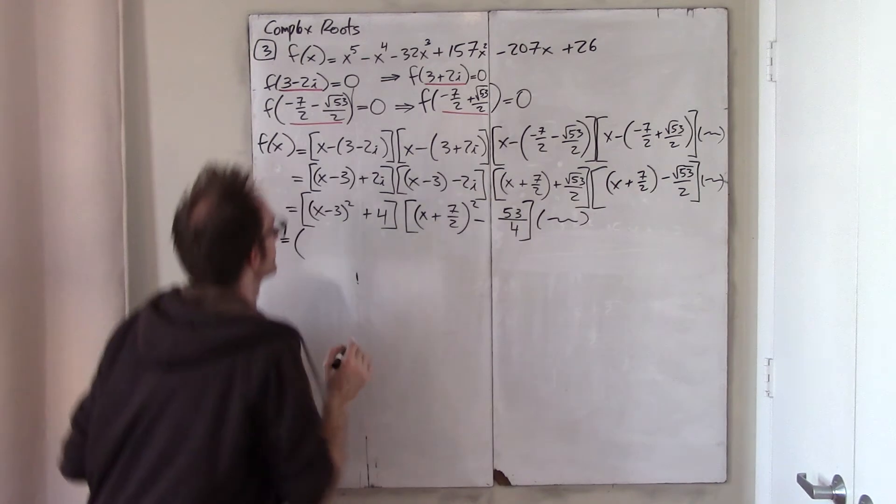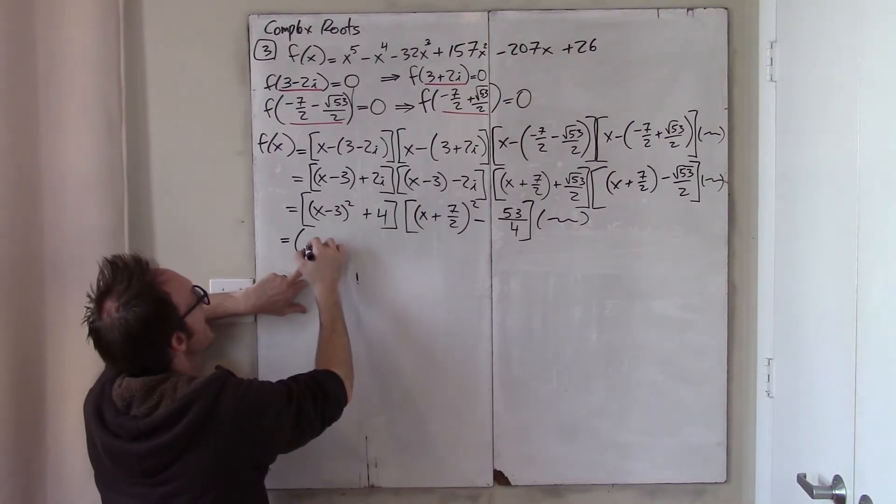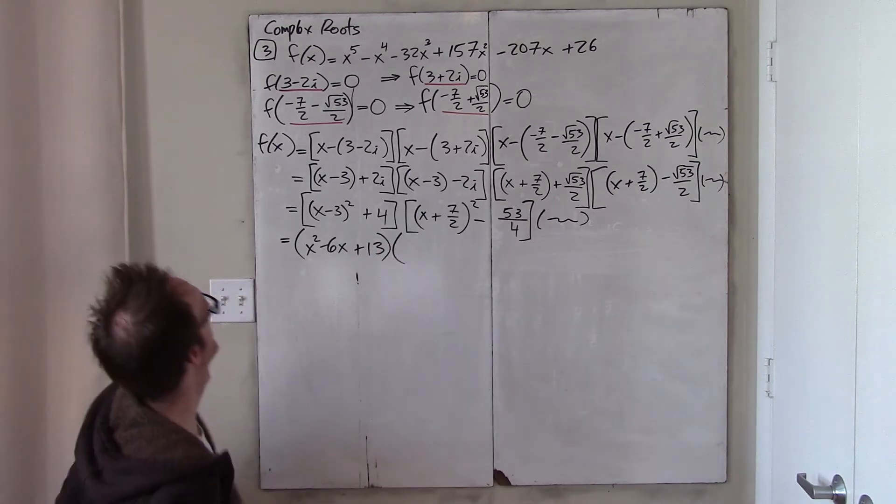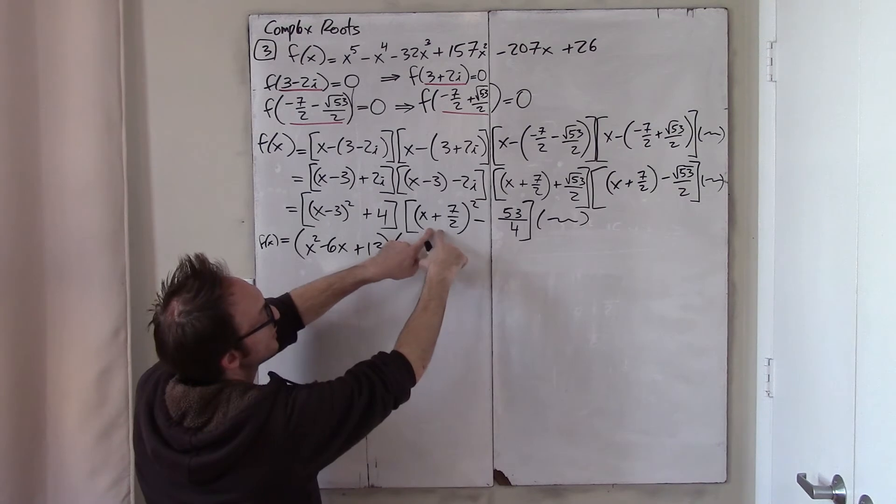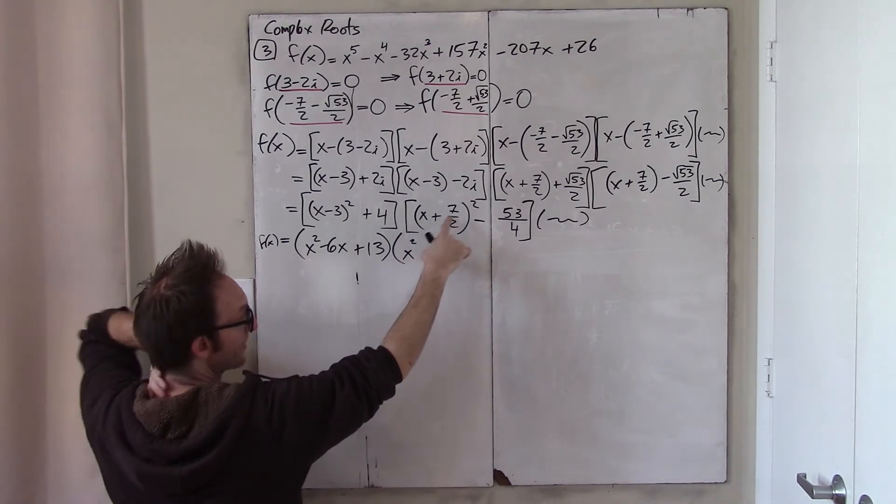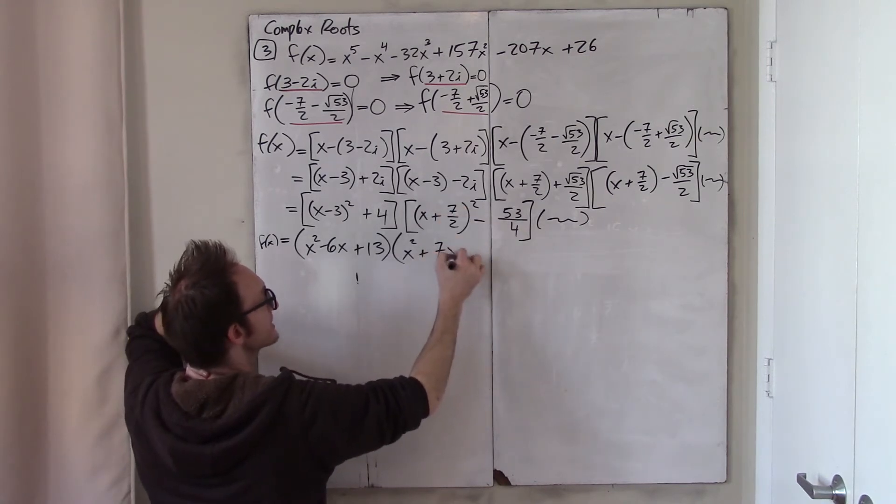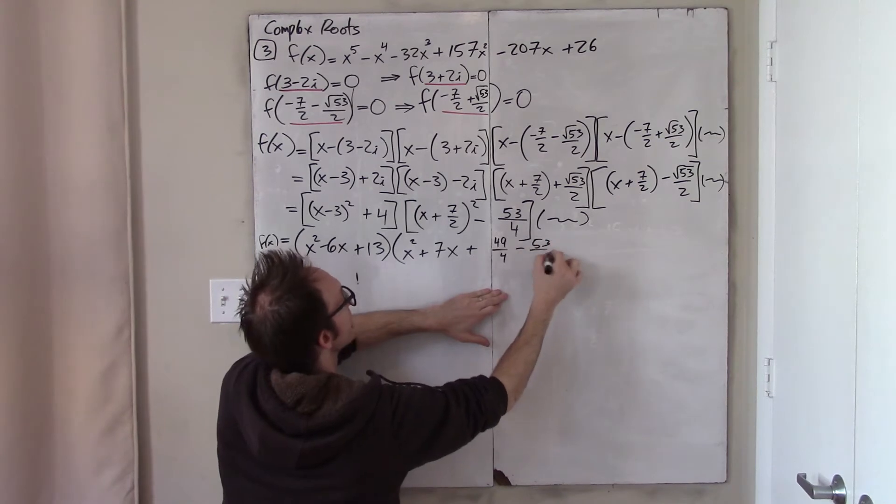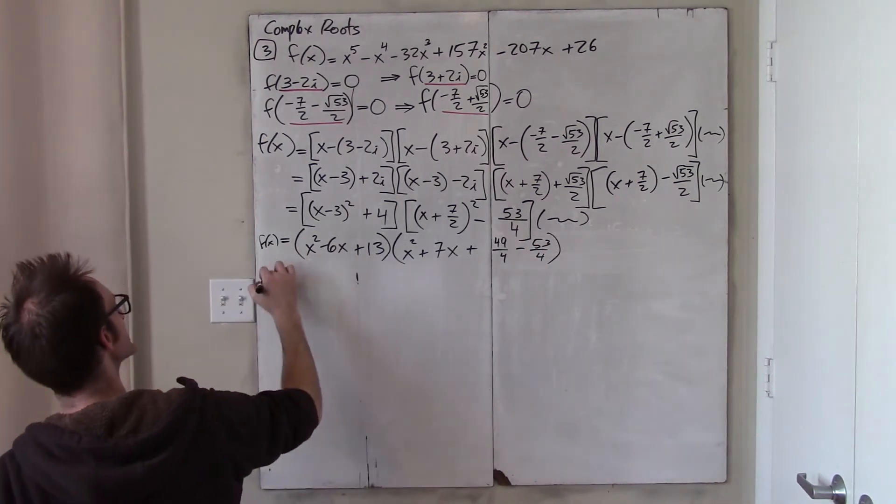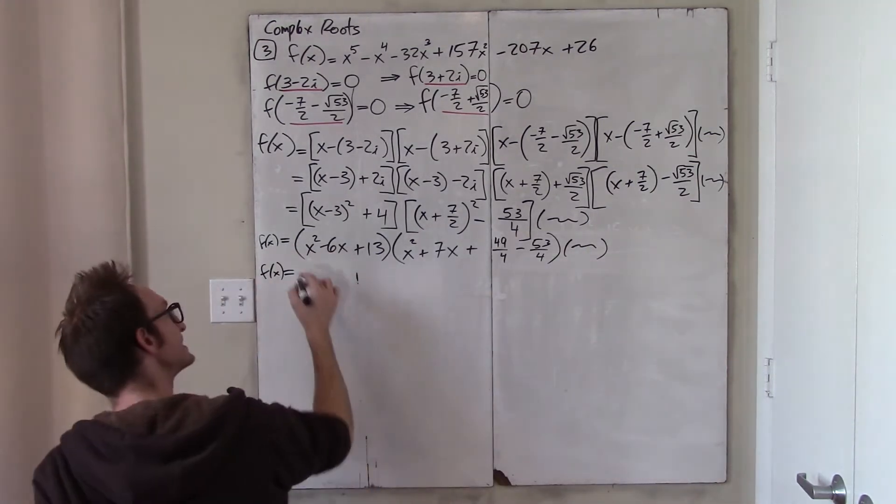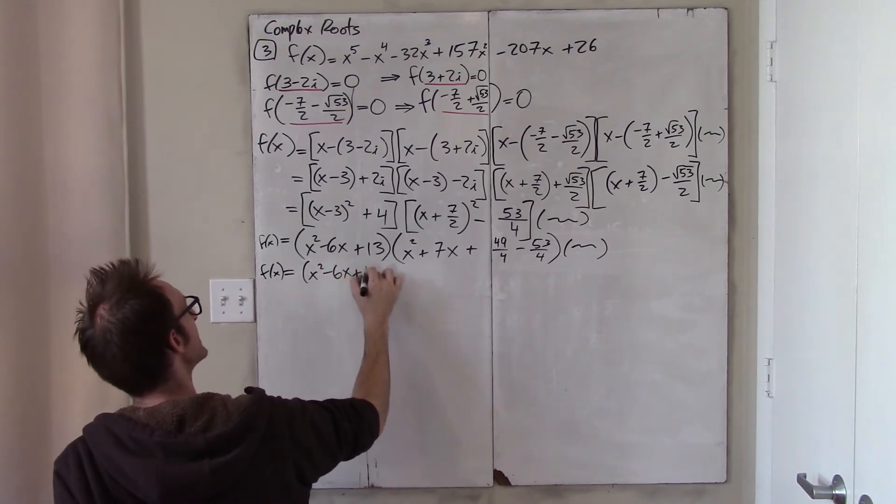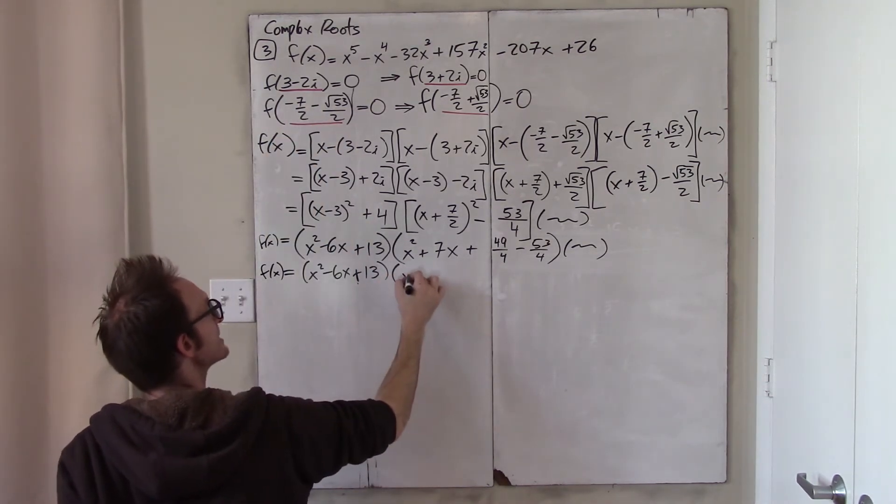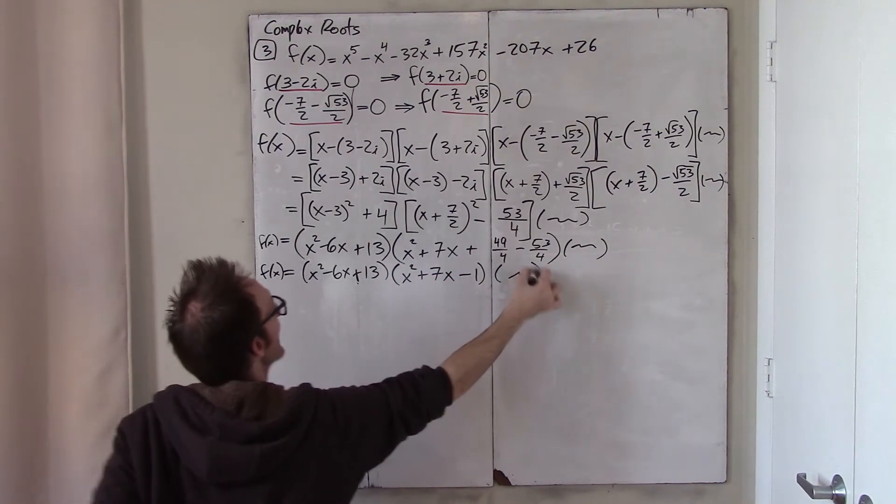Continuing to simplify, this becomes x squared minus 6x plus 9 plus 4. So, it's plus 13. And here, I get x squared. When you square this binomial, this becomes plus 7x. And then, plus, well, that's 49 fourths. But then, that's minus 53 fourths. So, the bottom line is, and then sometimes some leftover. I did all this hard work, and I found out that, basically, that x squared minus 6x plus 13 is, that quadratic is a factor of this quintic. And that x squared plus 7x minus 1 is a factor of this quintic.